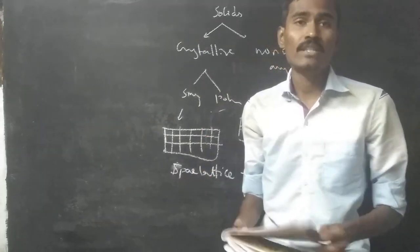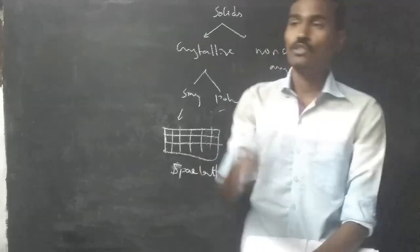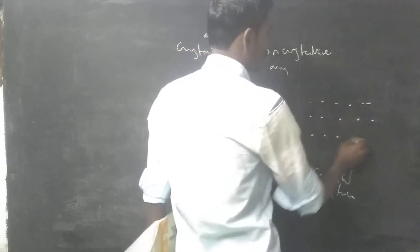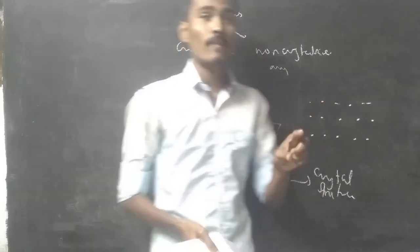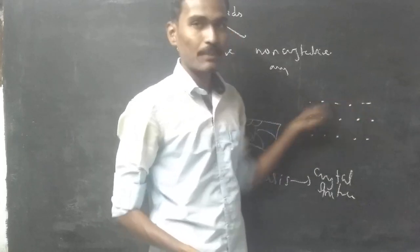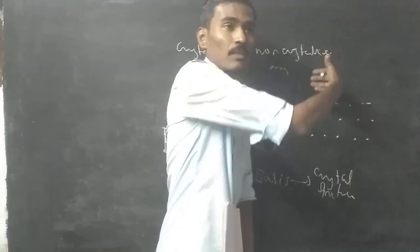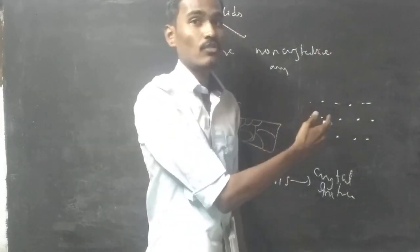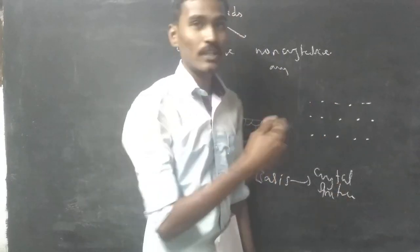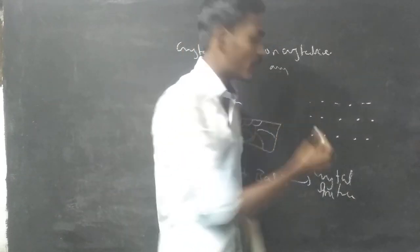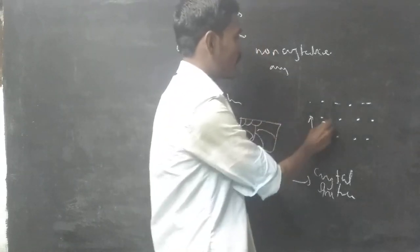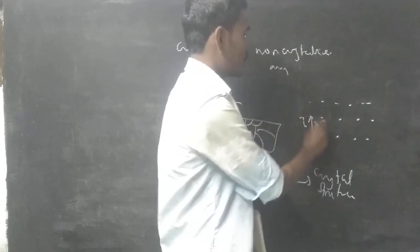Translation vectors describe the periodic arrangement. In three dimensions, we have translation vectors a, b, and c. The crystal is built up layer by layer — first layer, second layer, third layer — all with the same three-dimensional arrangement.